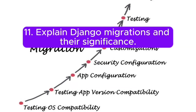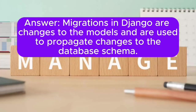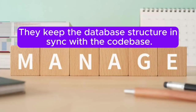Question 11: Explain Django migrations and their significance. Answer: Migrations in Django are changes to the models and are used to propagate changes to the database schema. They keep the database structure in sync with the codebase.